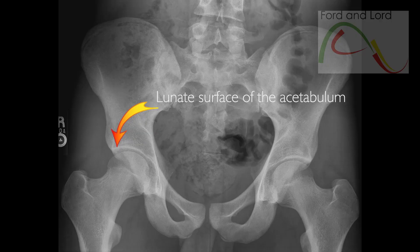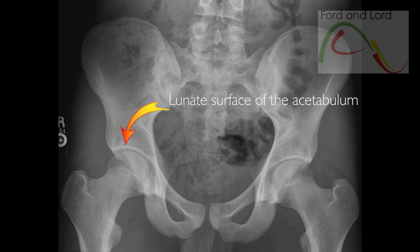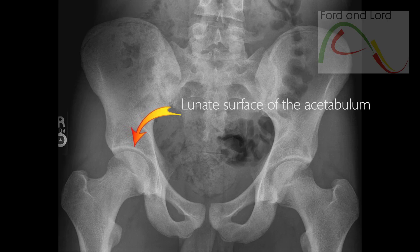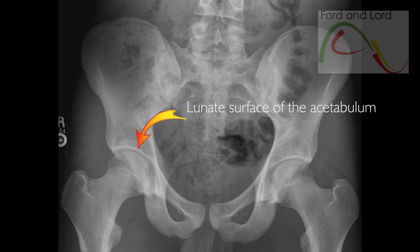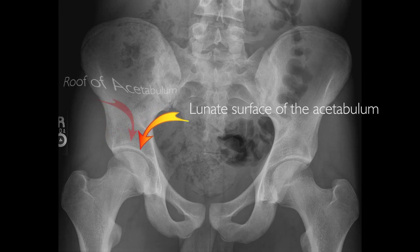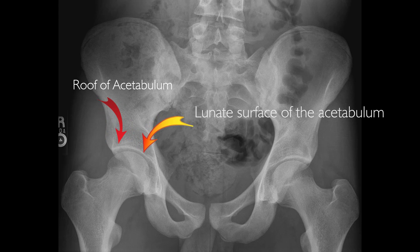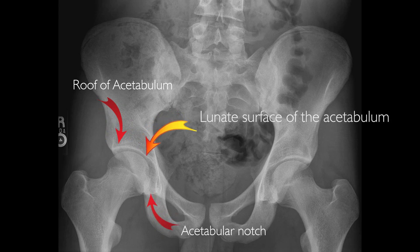This part of the rim shows the articulating surface superiorly, which, if you remember, is known as the lunate surface. This area is frequently referred to as the roof of the acetabulum. The acetabular notch is located inferiorly.